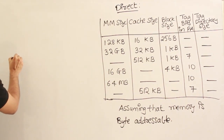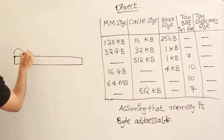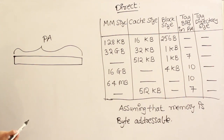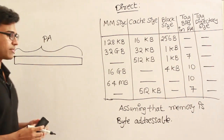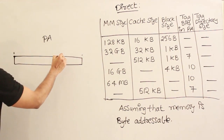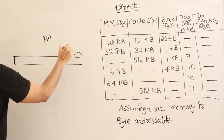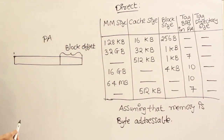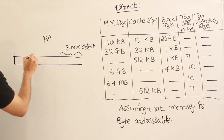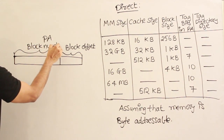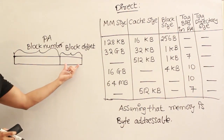Before solving: the physical address is used to address every element of main memory. When main memory is divided into blocks, the physical address can be represented as two parts: the block offset — used to identify a word within a block — and the block number.